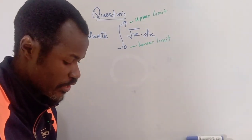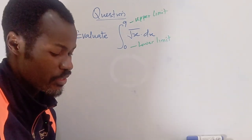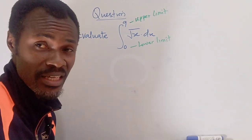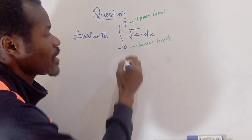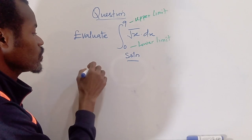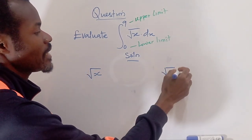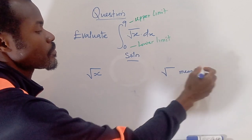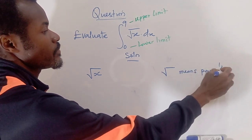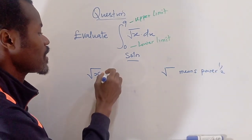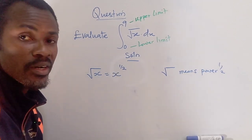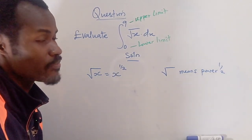After we've done the integration, we are going to use the values of the upper and lower limits and substitute into whatever expression we get. Now, the first thing — square root of x: the square root sign means the power of 1/2. So we can write this as x raised to the power of 1/2. That is our first step.